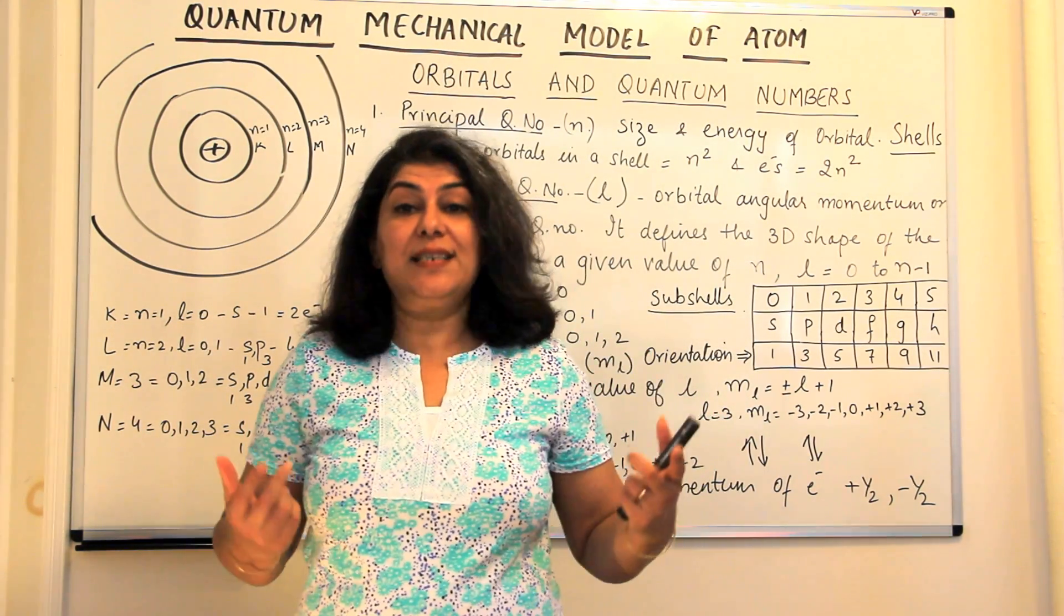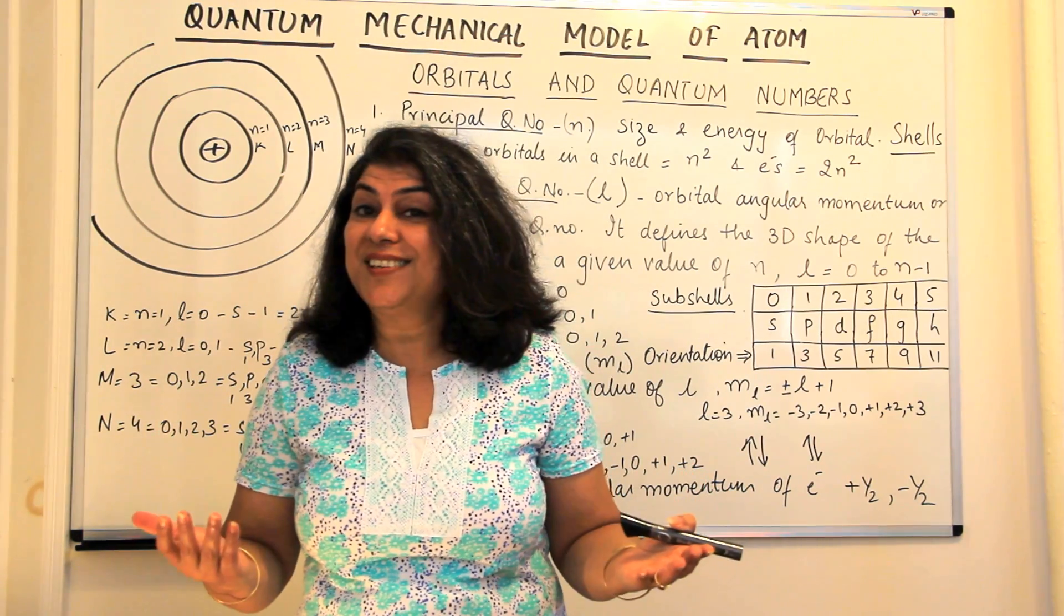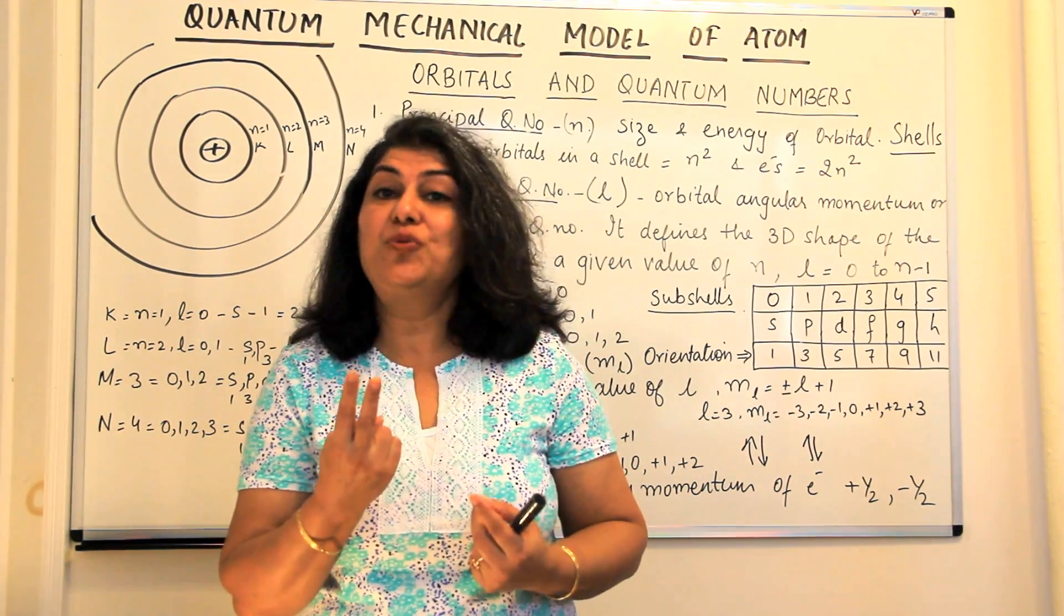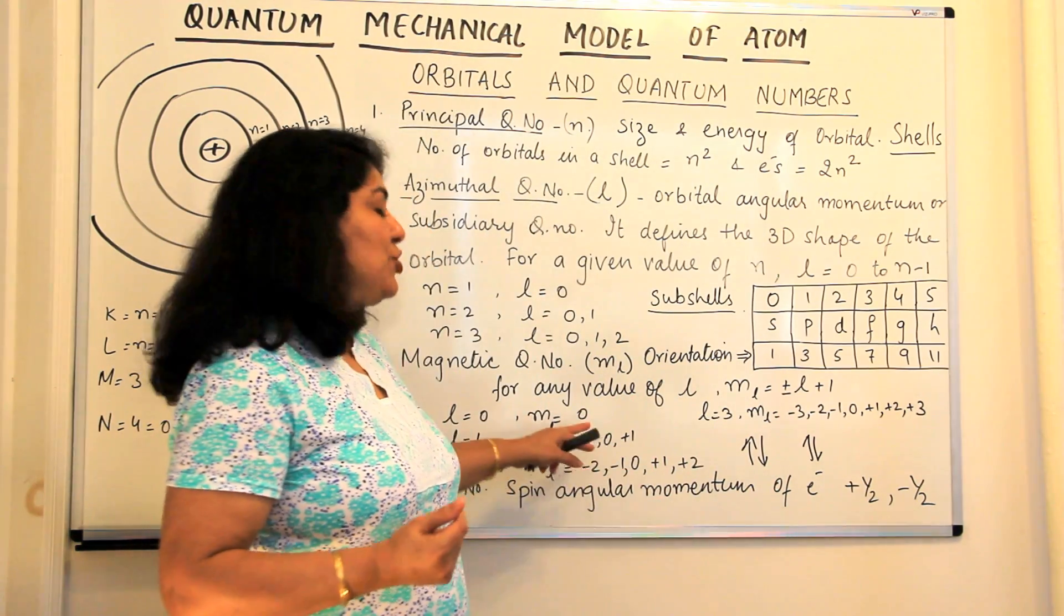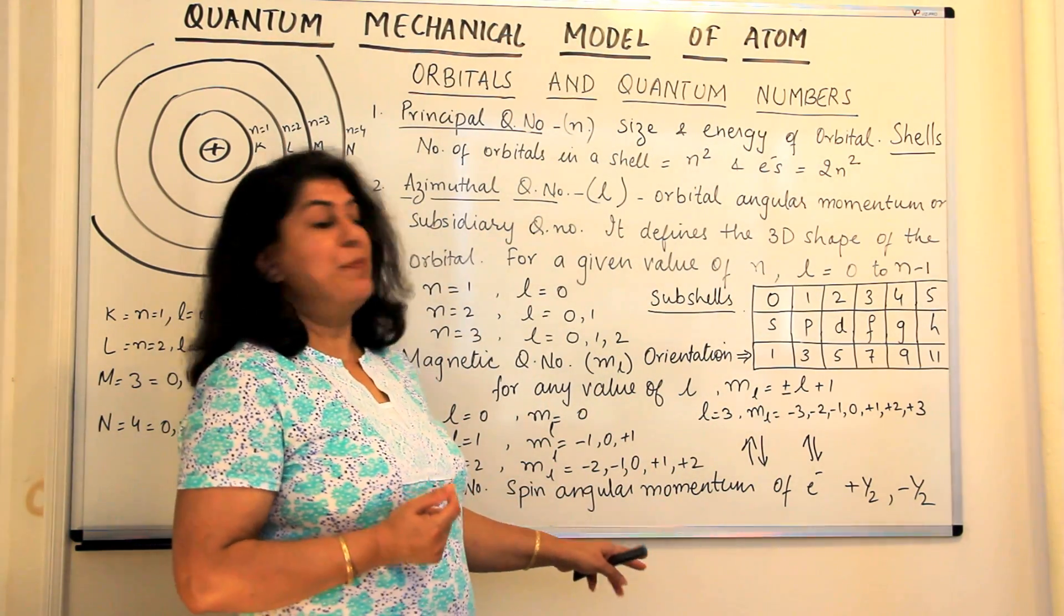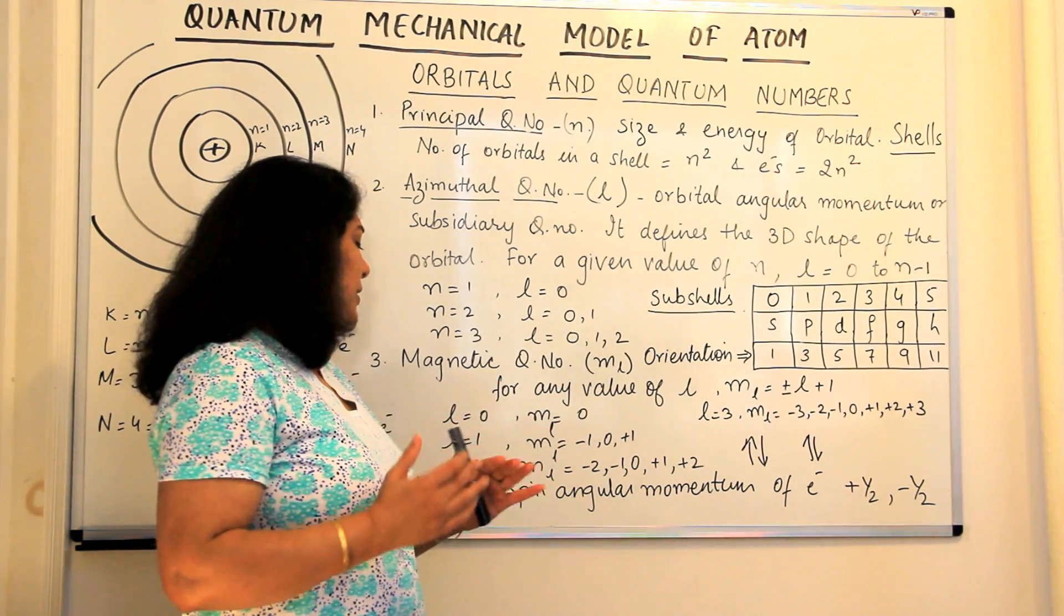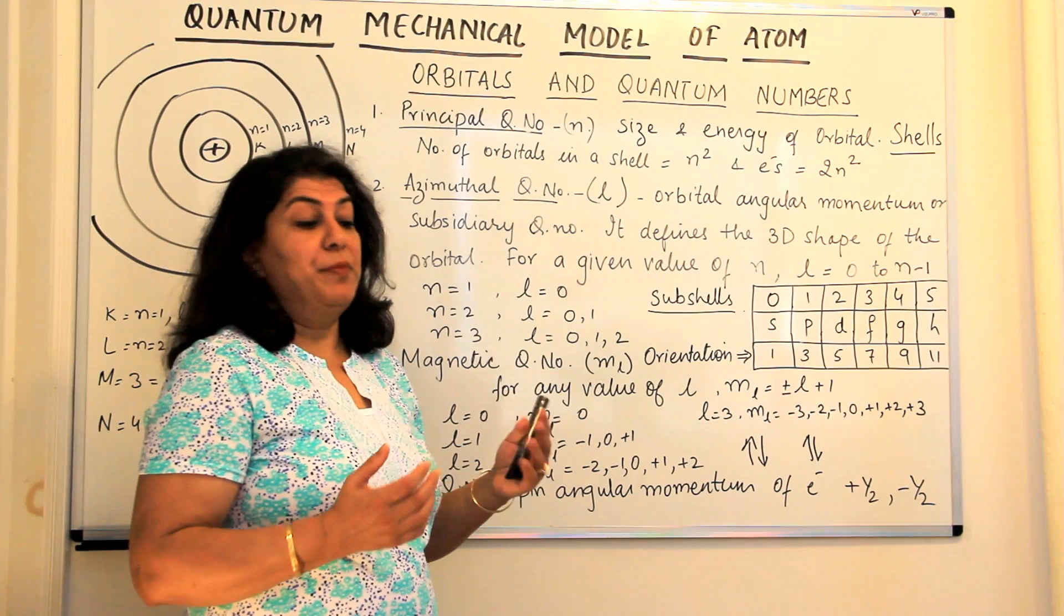Now since both of them are identical, how would you tell them apart? They also have some difference between the 2 of them. And that is told to us by the 4th quantum number which is known as the spin quantum number or the spin angular momentum quantum number.